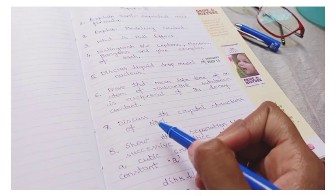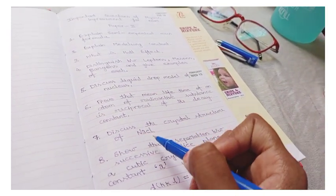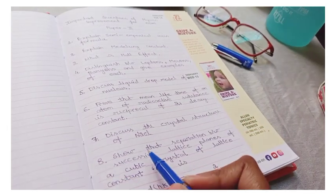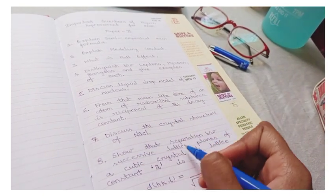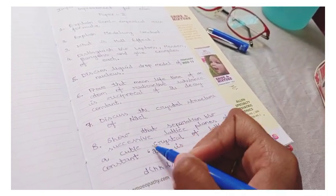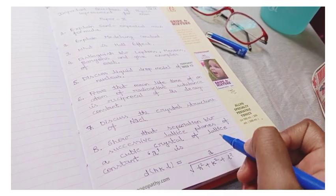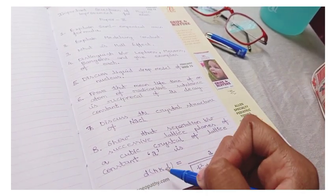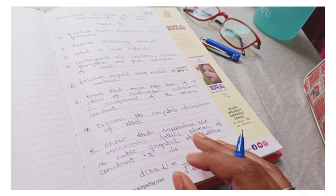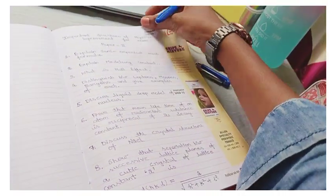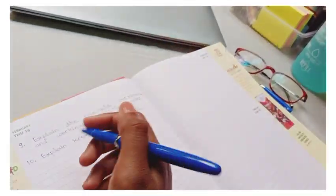And the seventh number question is: discuss the crystal structure of NaCl. This is less important, I don't think it's much important. Eighth is: show that separation between successive lattice planes of a cubic crystal of lattice constant A is d_hkl equals a upon root of h square plus k square plus l square. You have to prove it. This is long or short, you have to decide according to your length.